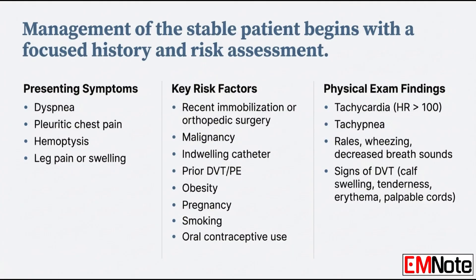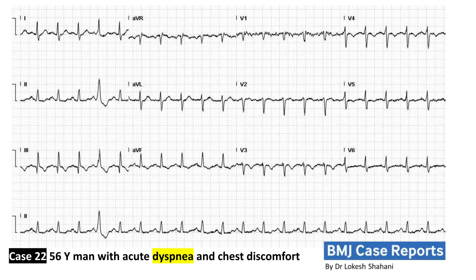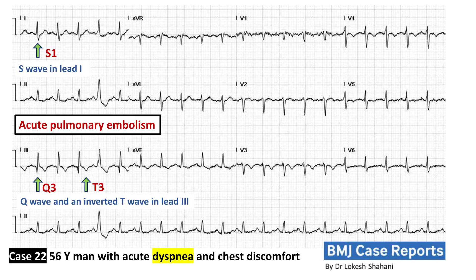Let's talk diagnostics. What's the most common finding on an electrocardiogram for a PE? By far, it's sinus tachycardia — the heart's just racing to compensate. But there's a less common but much more specific pattern: the S1Q3T3 pattern. When you see that, it's a classic, though not always present, sign of severe right ventricular strain. It's a powerful signal.